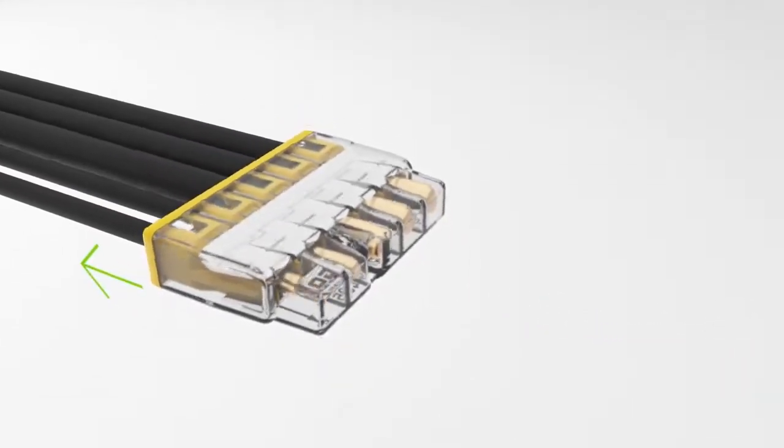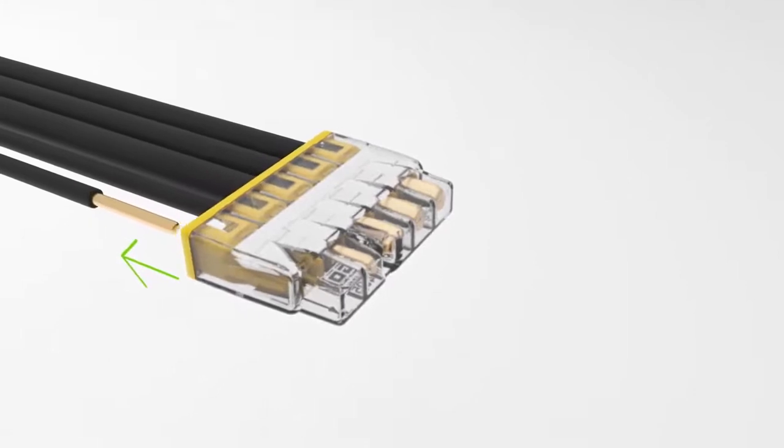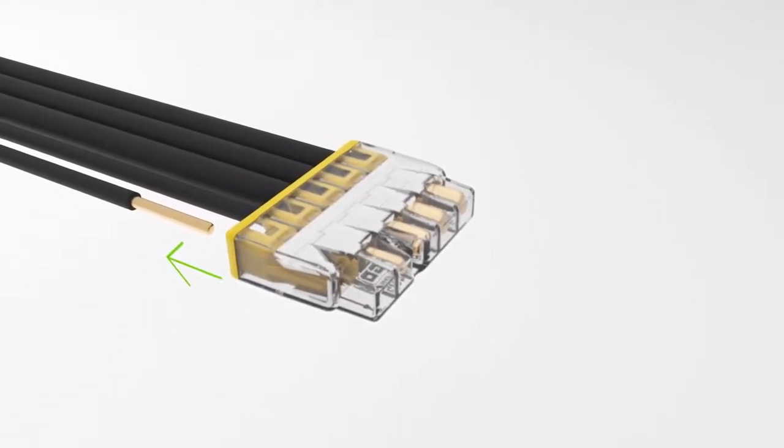Solid conductors can be removed by simply twisting and pulling at the same time, and the connector can be reused afterwards.